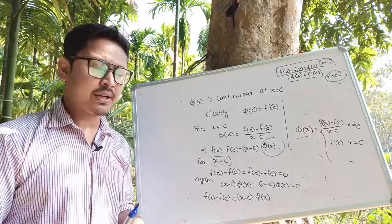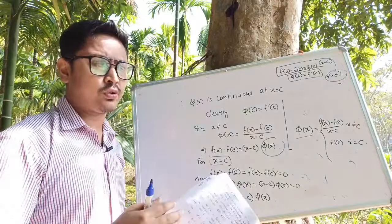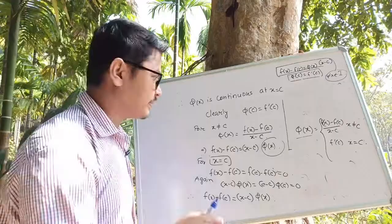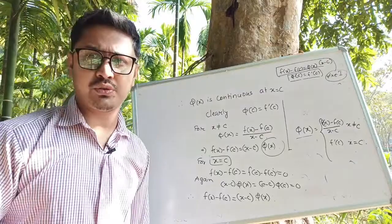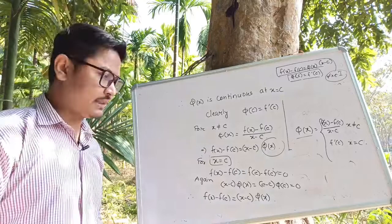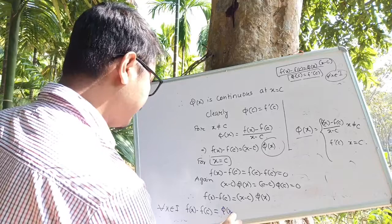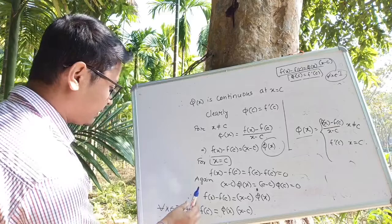Therefore for all x belonging to the interval I, f(x) minus f(c) equals phi(x) into (x minus c) — the rule is satisfied by the function phi(x) for all x in I. So that completes the first part of the proof. The function phi satisfies the rule, and phi(c) equals f'(c).